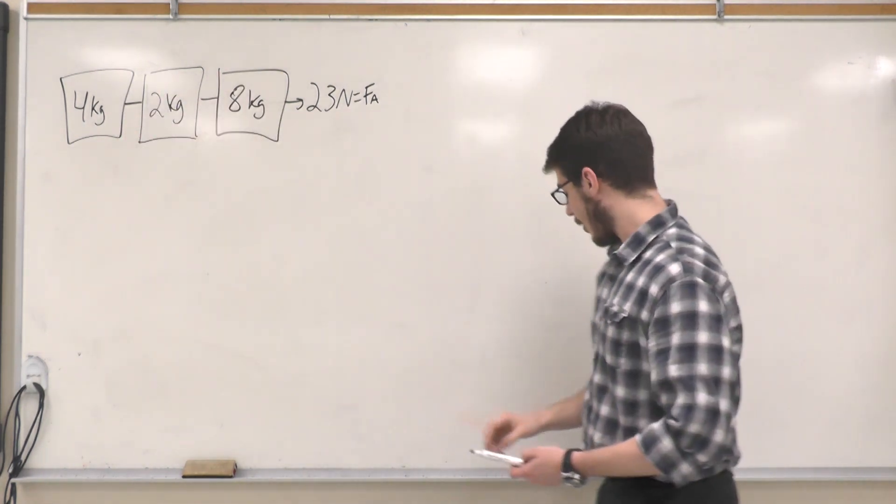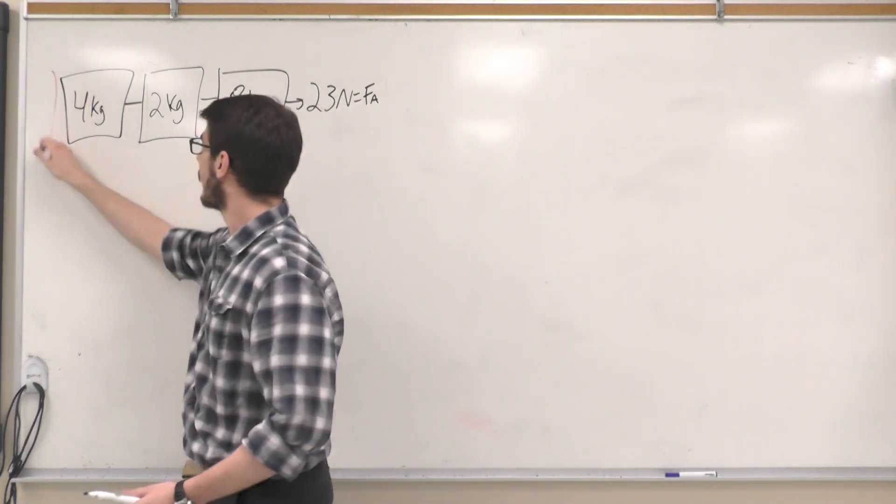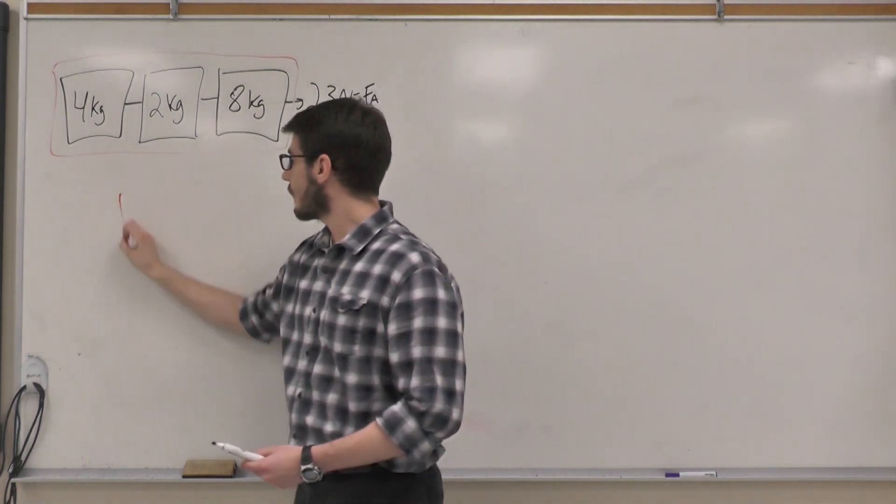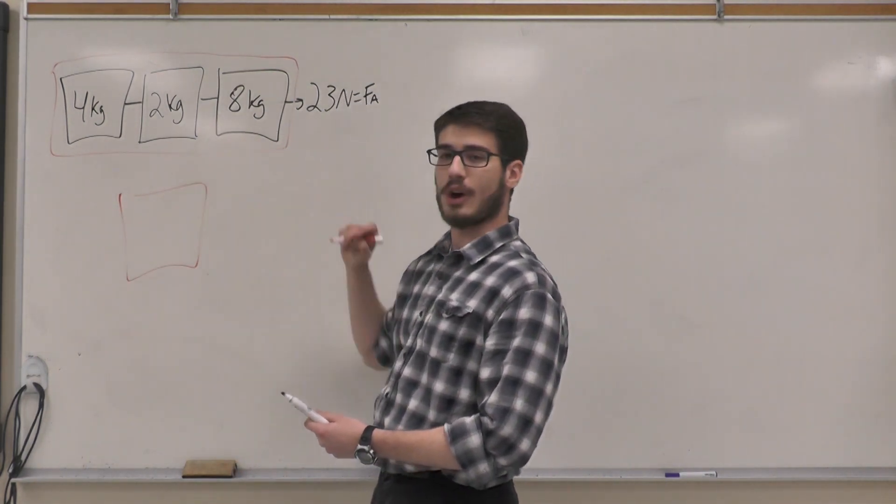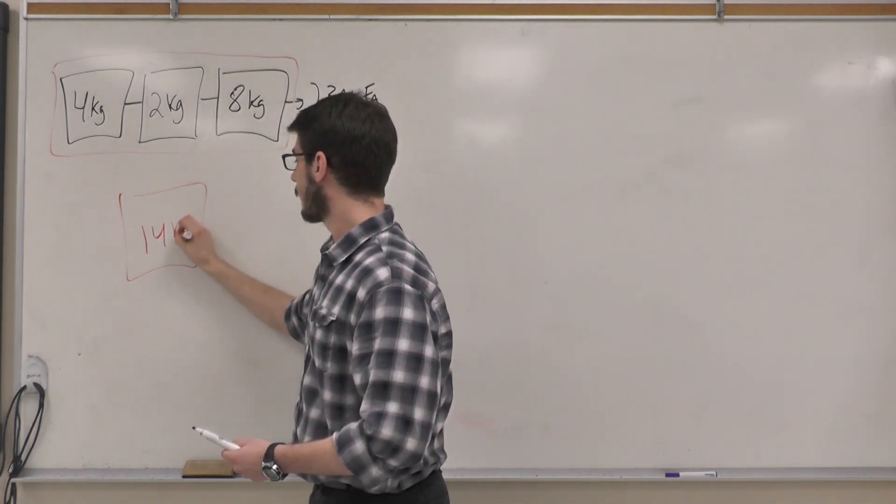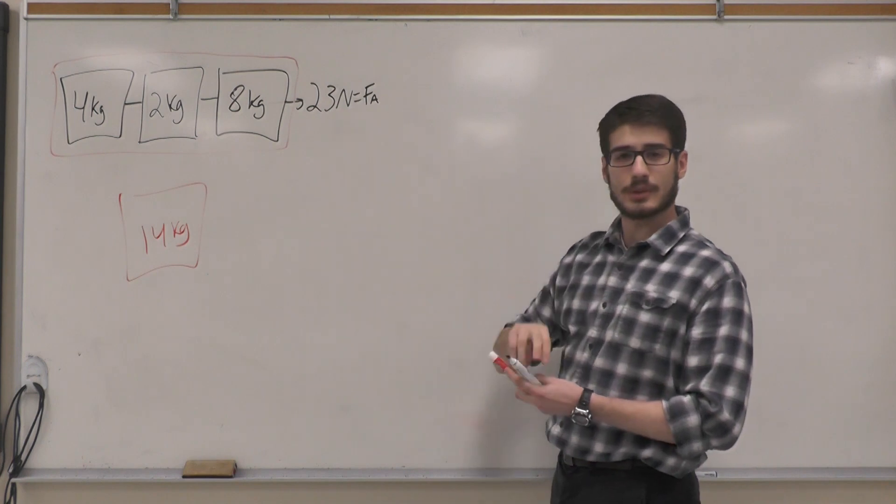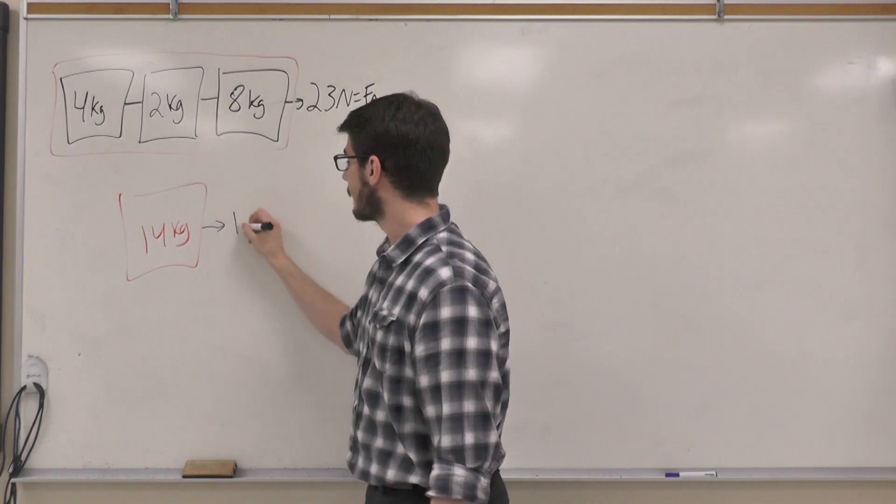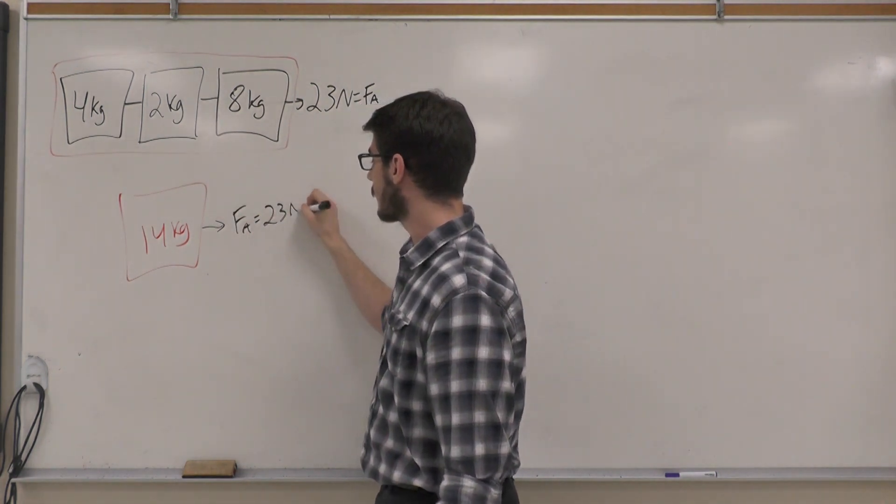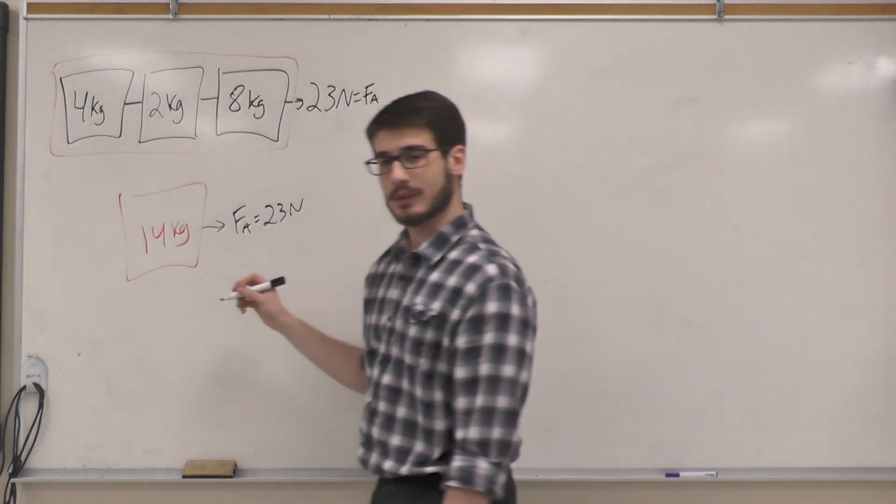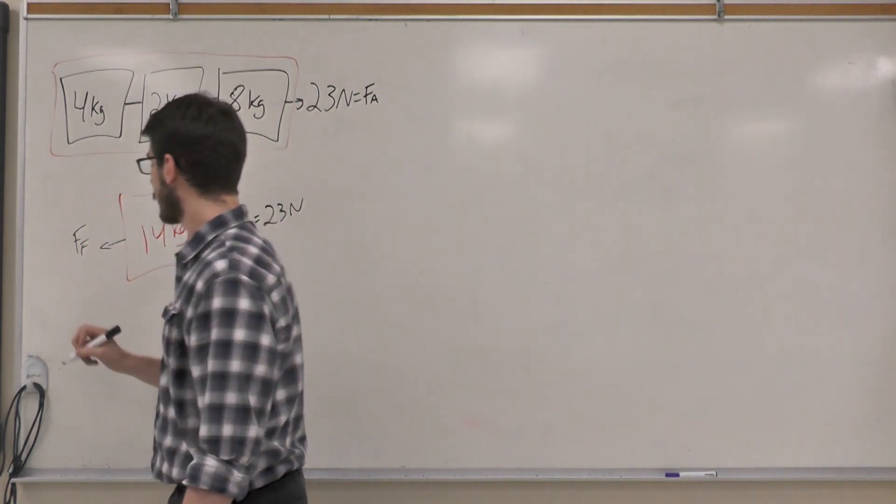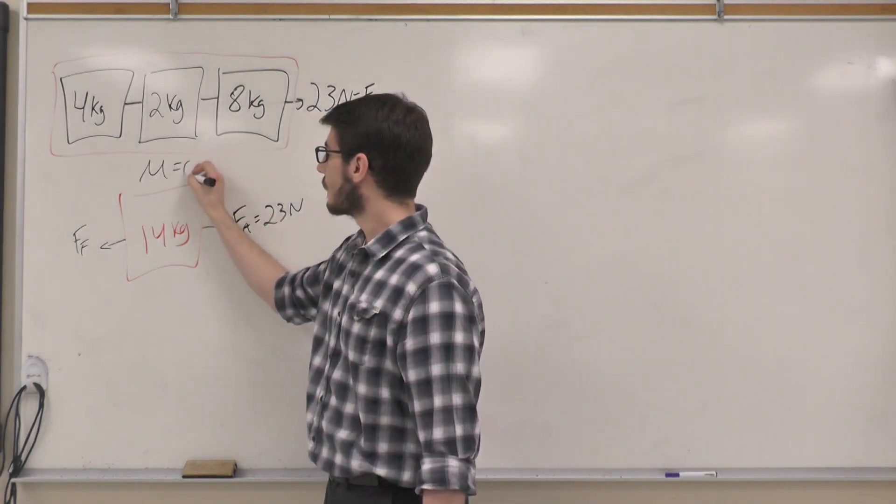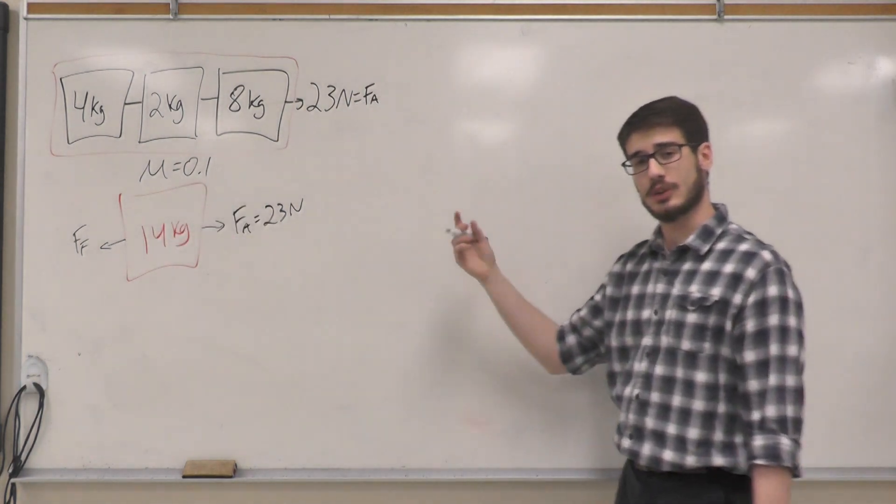I'm going to start the question by imagining all three of them are combined together into one giant container. The mass will be all three of them added together. Force applied will still remain the same. The entire train is moving with the same amount of acceleration, and the force of friction is pulling it back. The question tells me that the mu for the entire problem will be 0.1.